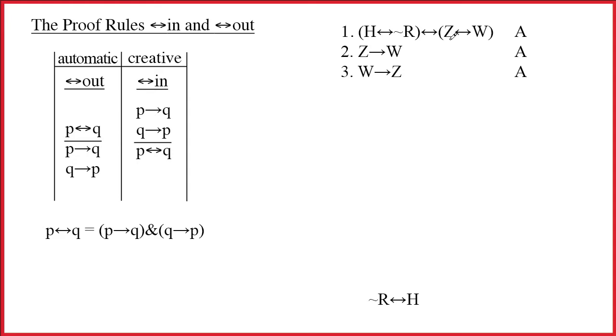Looking at line one, we notice that the double arrow's the main connective. That's great news. It's just as good as seeing an ampersand, because we know that we can immediately create two new lines. Since we know the main connective, we know that everything in front of it is P, and everything after it is Q. P double arrow Q breaks into two single arrows, and that's what we're going to do.